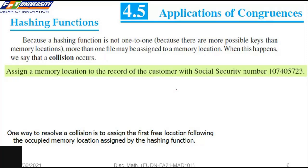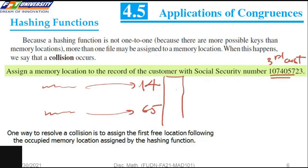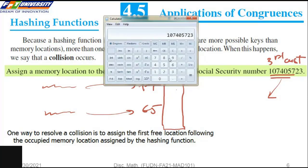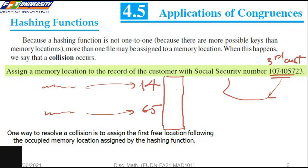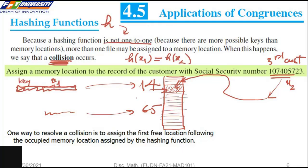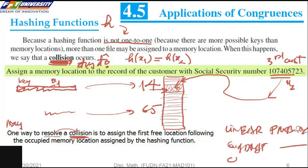Because a hashing function is not one-to-one — since there are more keys than memory locations — more than one file might be assigned to the same memory location. This is called a collision. It means that h1 and h2 hash to the same location. If a hashing function produces a collision, we have many ways to solve it.